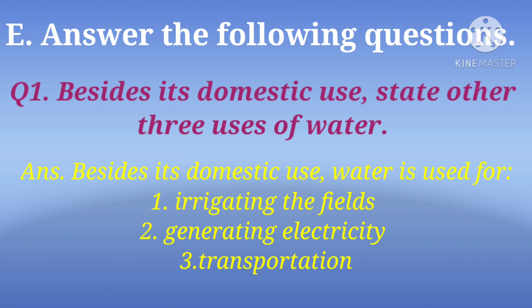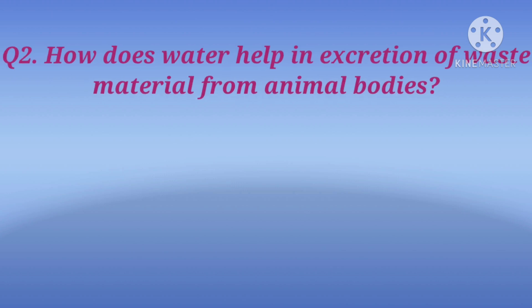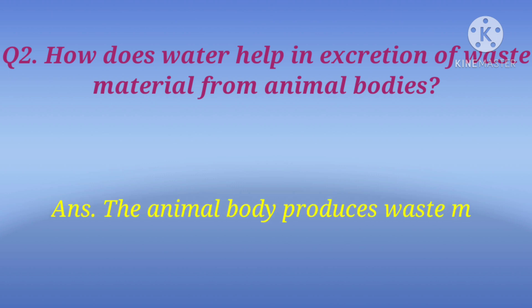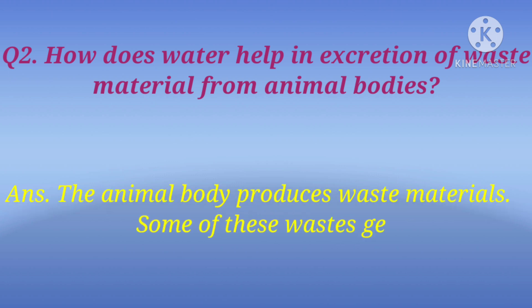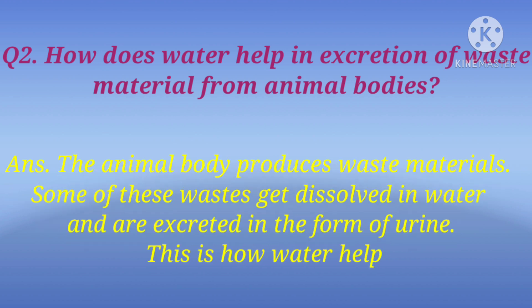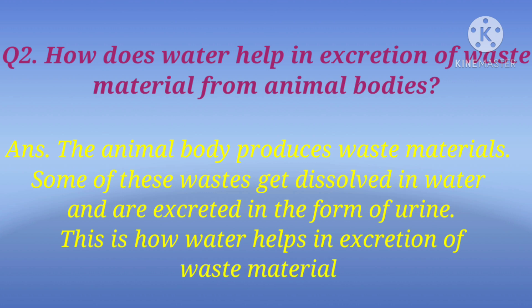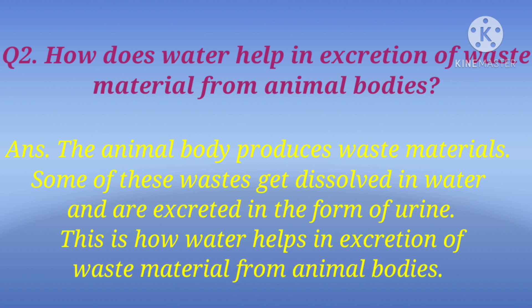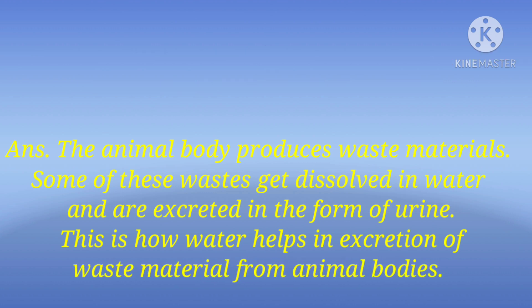The next question is: how does water help in excretion of waste material from animal bodies? The answer is: the animal body produces waste materials. Some of these wastes get dissolved in water and are excreted in the form of urine. This is how water helps in excretion of waste materials from animal bodies.